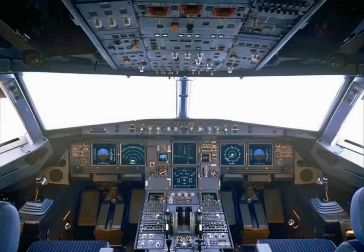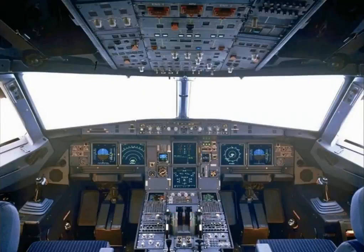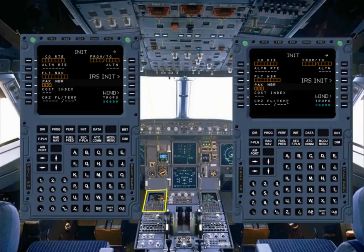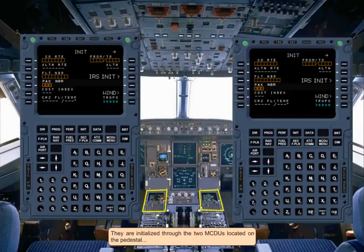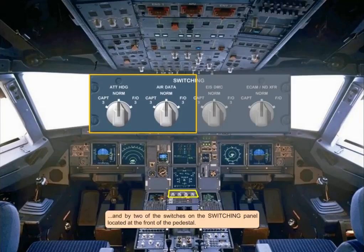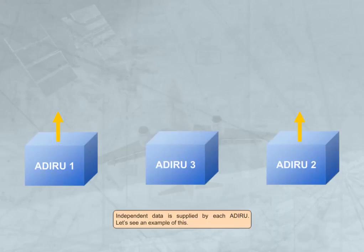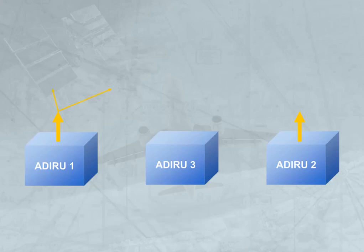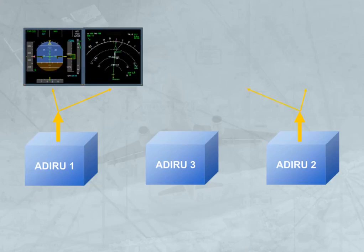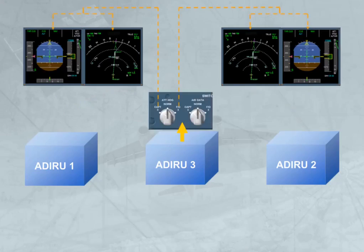The three ADRs are controlled through the ADRs panel, located on the overhead panel. They are initialized through the two MCDUs located on the pedestal, and by two of the switches on the switching panel located at the front of the pedestal. Independent data is supplied by each ADR. For example, in the EFIS system, ADR 1 supplies the captain's EFIS, ADR 2 supplies the first officer's EFIS, and ADR 3 is available as a backup to either EFIS system via the switching panel.